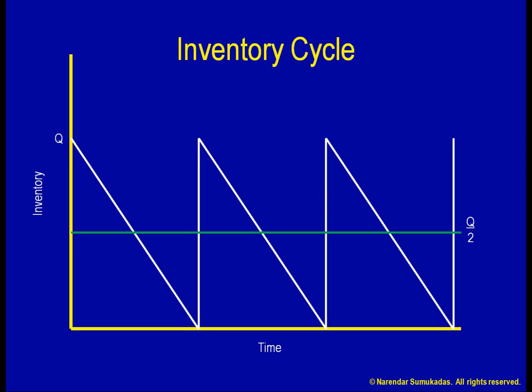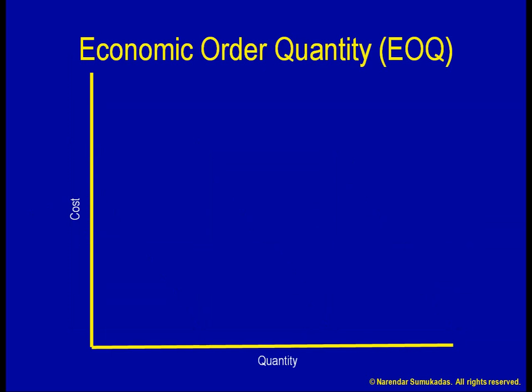To do that, however, we first need to reduce the reasons for large batches. Applying the principles of the economic order quantity (EOQ), we see that if our batch size increases, our average inventory increases, as does the inventory holding cost.